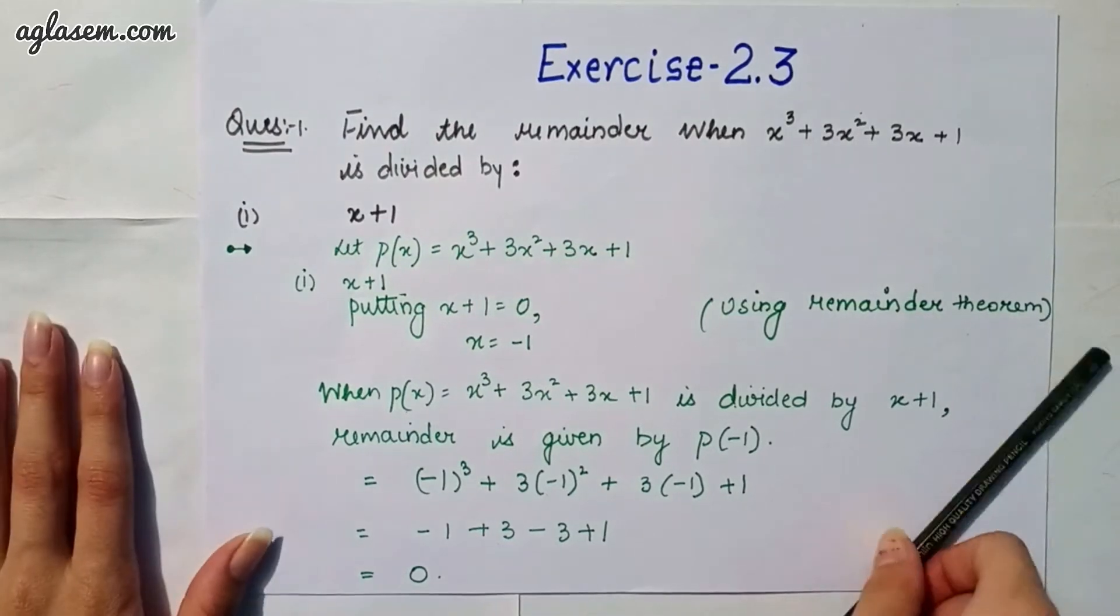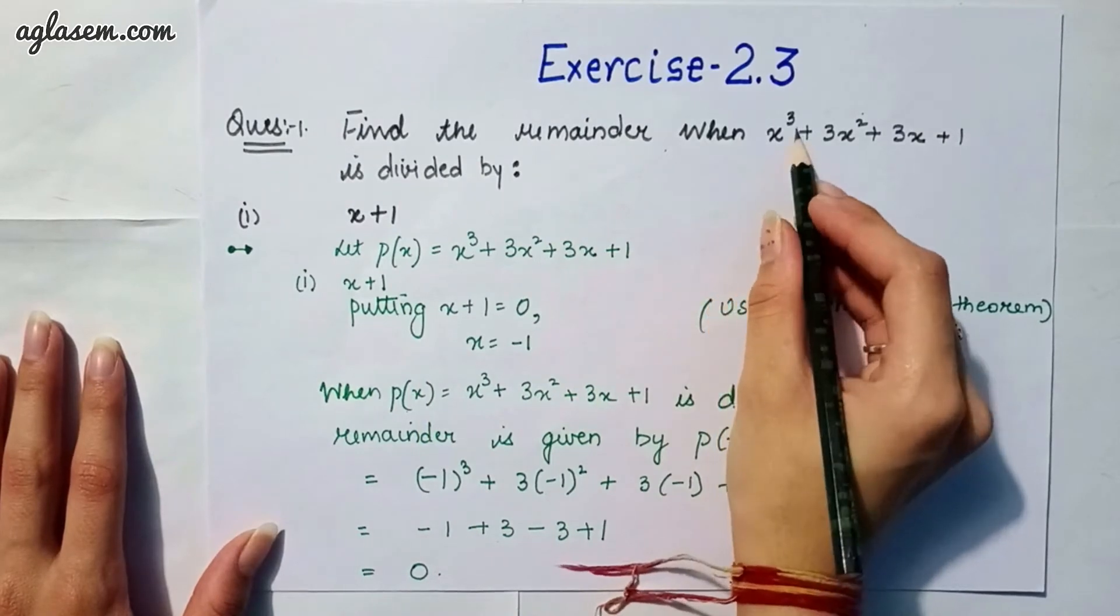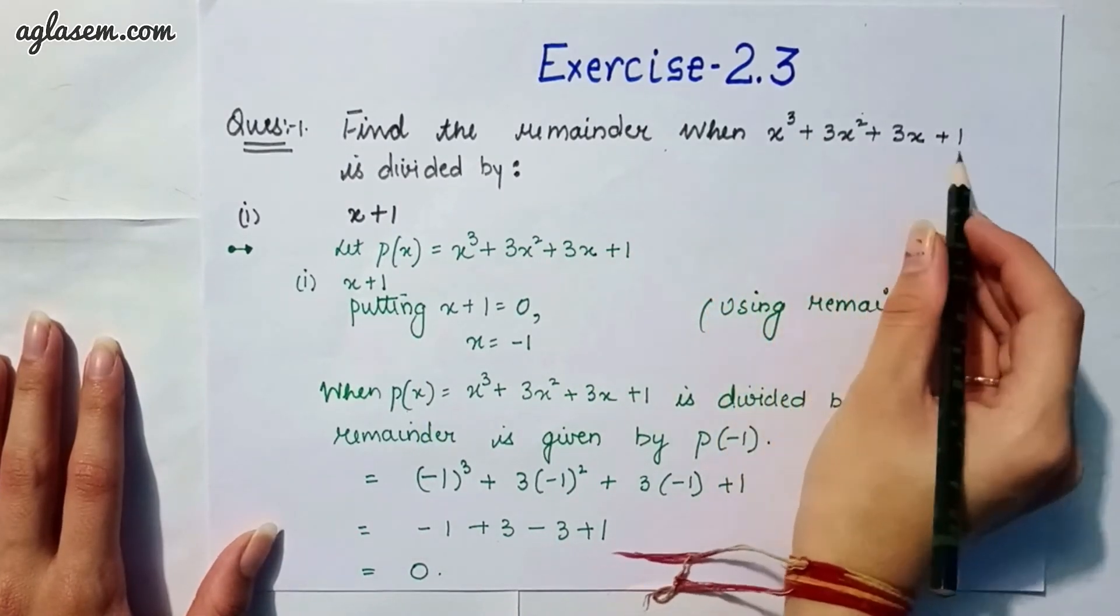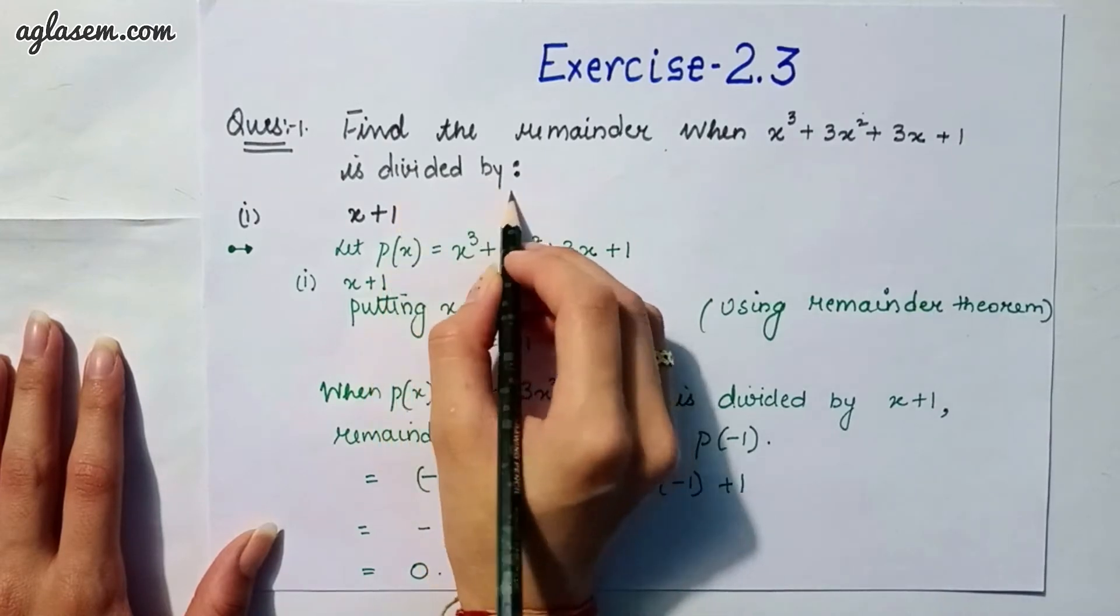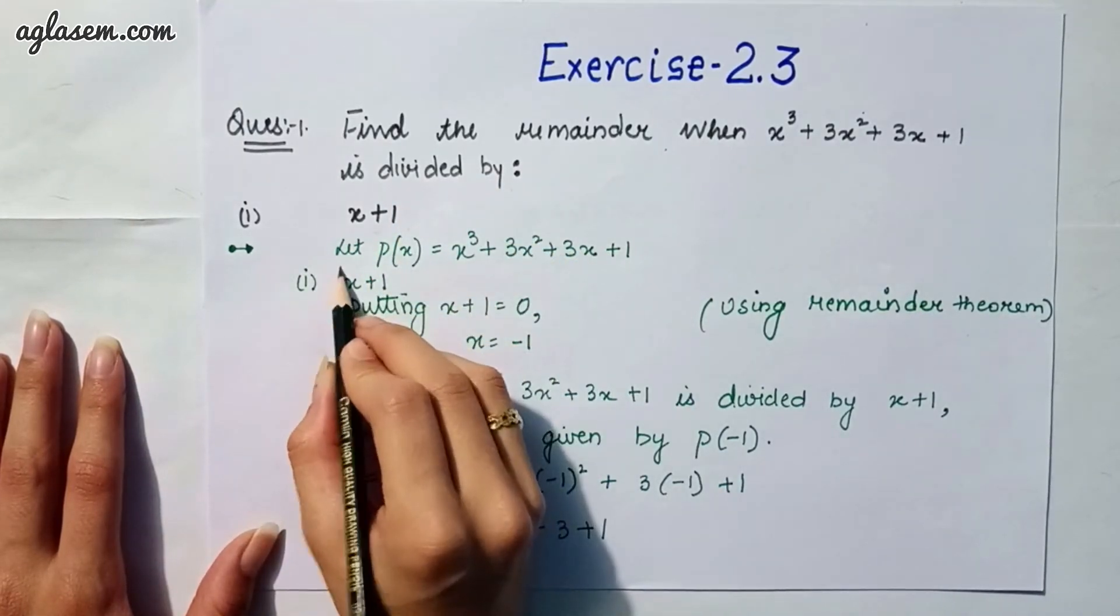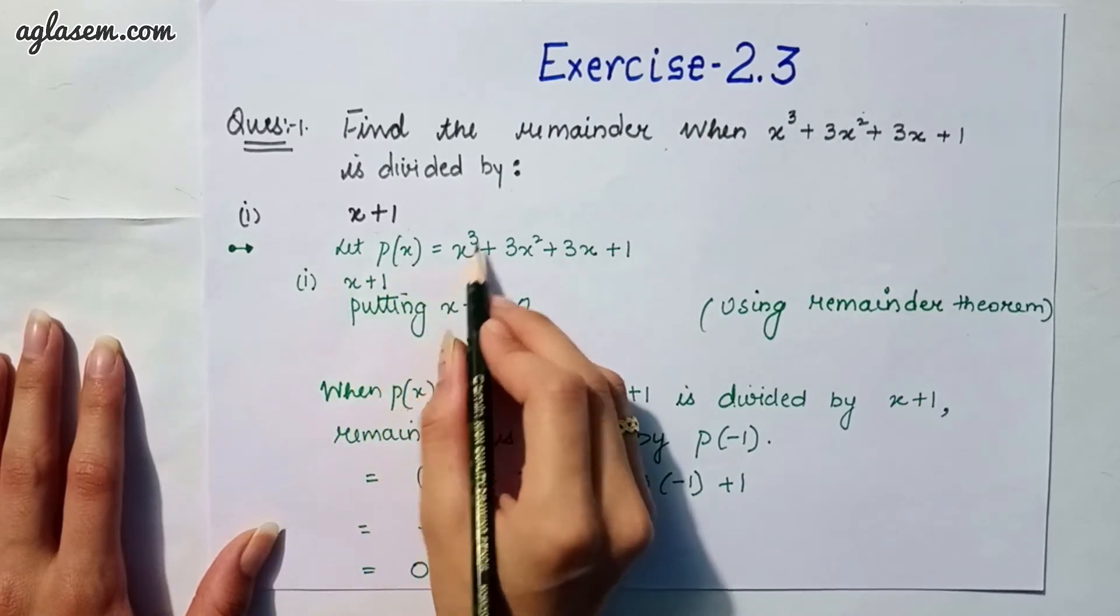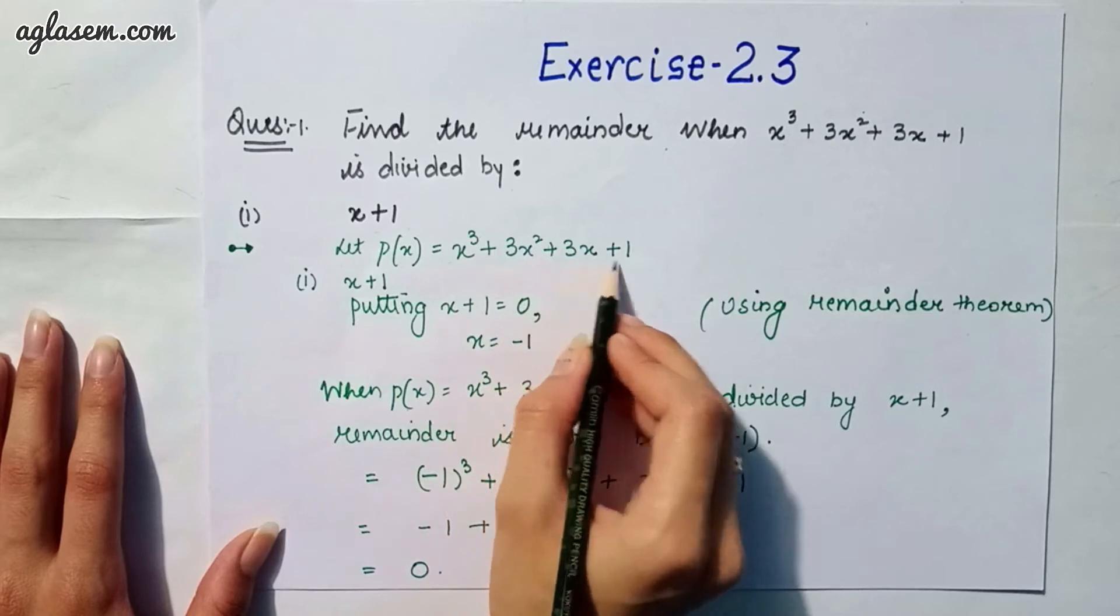Find the remainder when x³ + 3x² + 3x + 1 is divided by, number 1 is x + 1. So, first of all, we have to let P(x) = x³ + 3x² + 3x + 1.